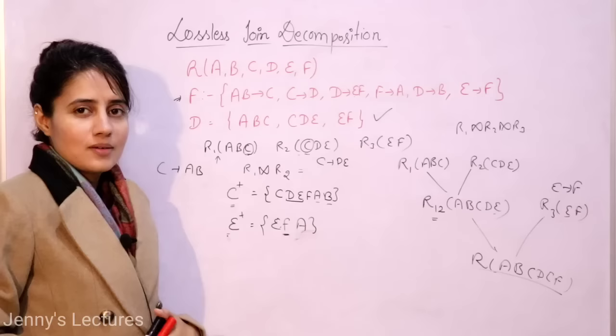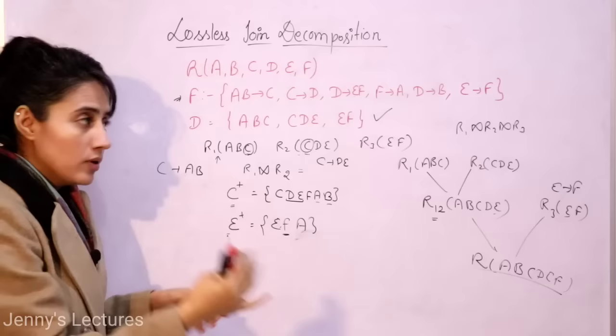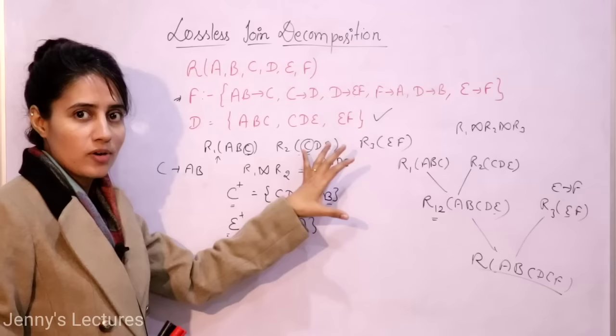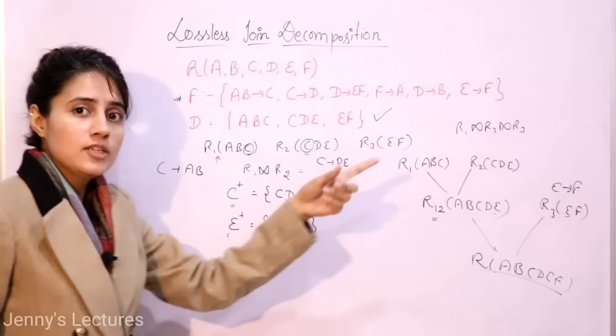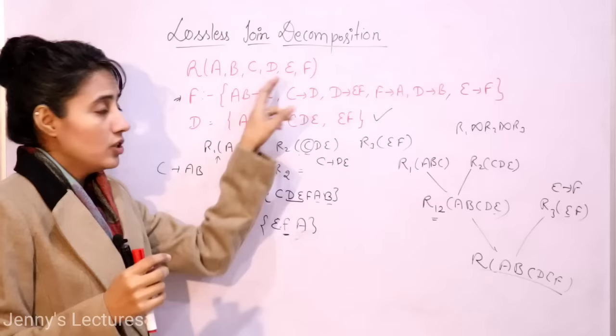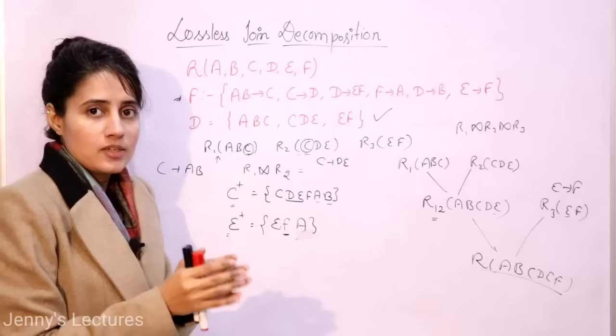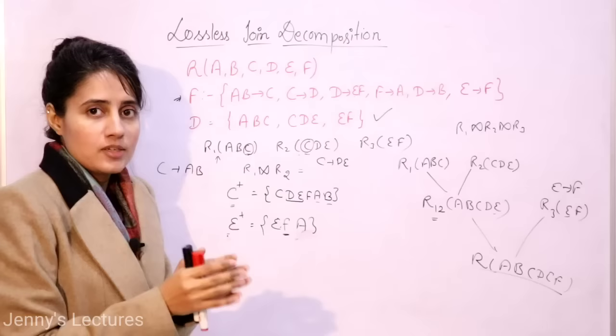Now the question for you: check whether this decomposition is dependency preserving or not, considering the functional dependencies including E→F. This is a lossless join decomposition after including that functional dependency, but without it, it is not lossless. From the next video we will discuss how to convert a relation into higher normal forms — from 1NF to 2NF, 3NF, and BCNF — and later we will cover fourth and fifth normal forms and multi-valued functional dependencies.